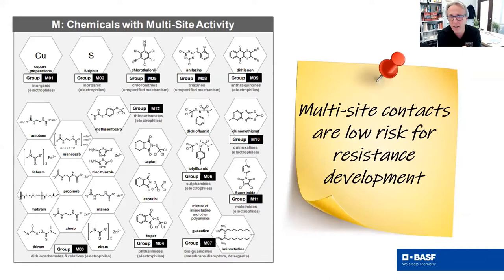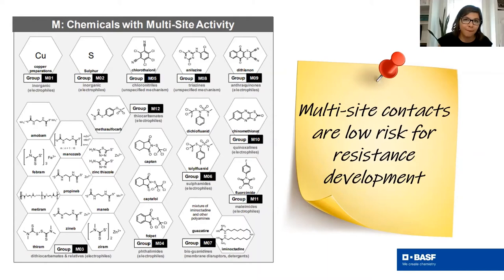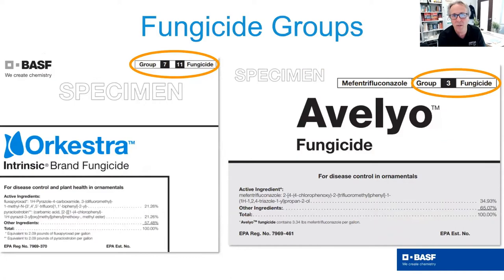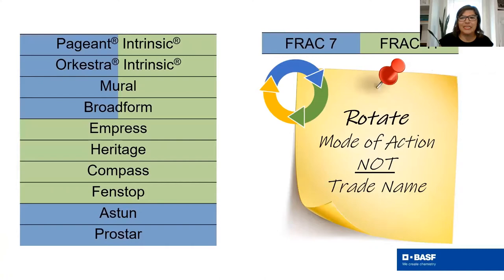The 'M' designation in FRAC codes does correspond to multi-site activity — M10, M06, and similar codes all indicate multi-site fungicides. The number after M is just part of the labeling scheme grouping them by chemical class; it doesn't indicate the number of sites. Biopesticides have their own special designation, either a B or P. This grouping system helps you identify which products can work together without simply having the full FRAC chart at your disposal.